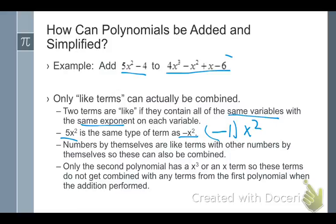Numbers by themselves are like terms. So anytime you have just a number standing alone and another number standing alone, you can combine them. The sign in front of the number is what you're using to combine them. So if I want to combine this negative 6, the 6 with the 4, it's a negative 4 plus a negative 6. And in this problem, only the second polynomial has an x cubed term or an x term. So they end up not getting combined with anything else because there's no other terms that have those same variables with those same exponents in this problem.